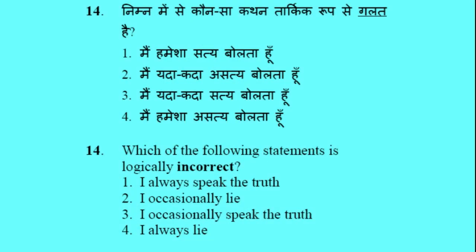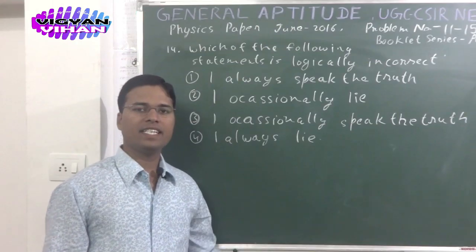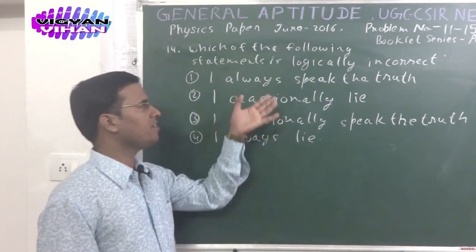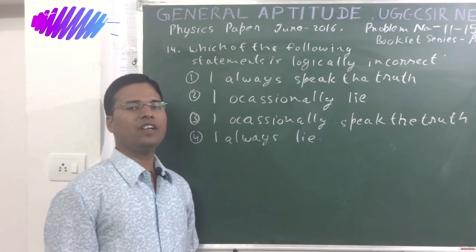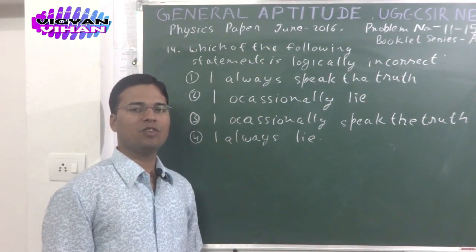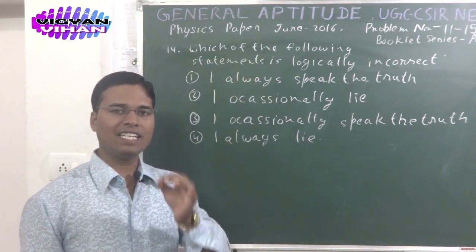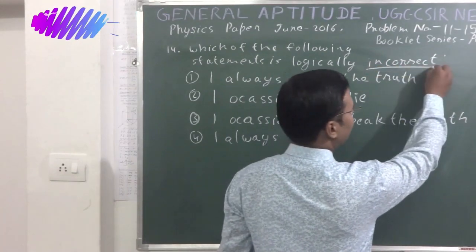Problem number 14: Which of the following statements is logically incorrect? Option 1: I always speak the truth. Option 2: I occasionally lie. Option 3: I occasionally speak the truth. Option 4: I always lie. We will have to find out which statement is logically incorrect and underline it.